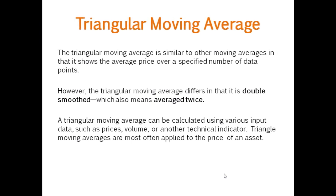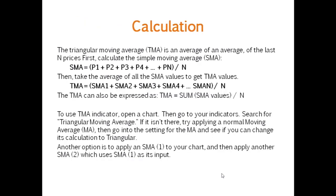The Triangular Moving Average is similar to other moving averages in that it shows the average price over a specified number of data points. However, the Triangular Moving Average differs in that it double smooths, which means it averages twice. The TMA can be calculated using various input data such as price, volume, and other technical indicators, and is most often applied to the price of an asset.